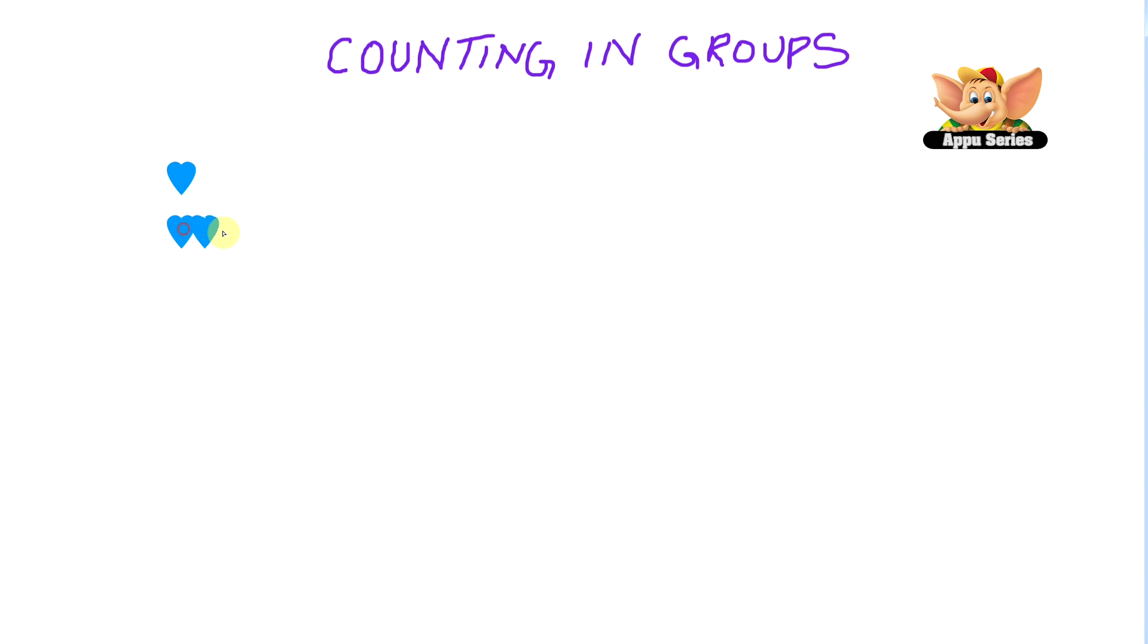Now let me give you a slightly tricky question. We have a whole bunch of hearts here. How many more such groups do you need to make the total to thirty hearts? Now we have three groups - one, two, three - each group has six hearts each.